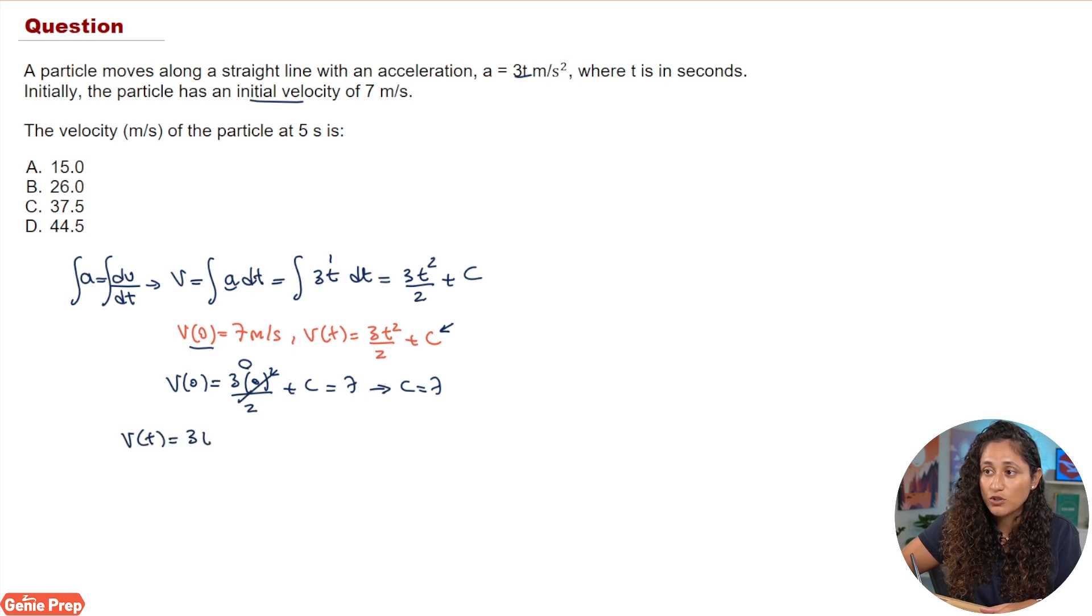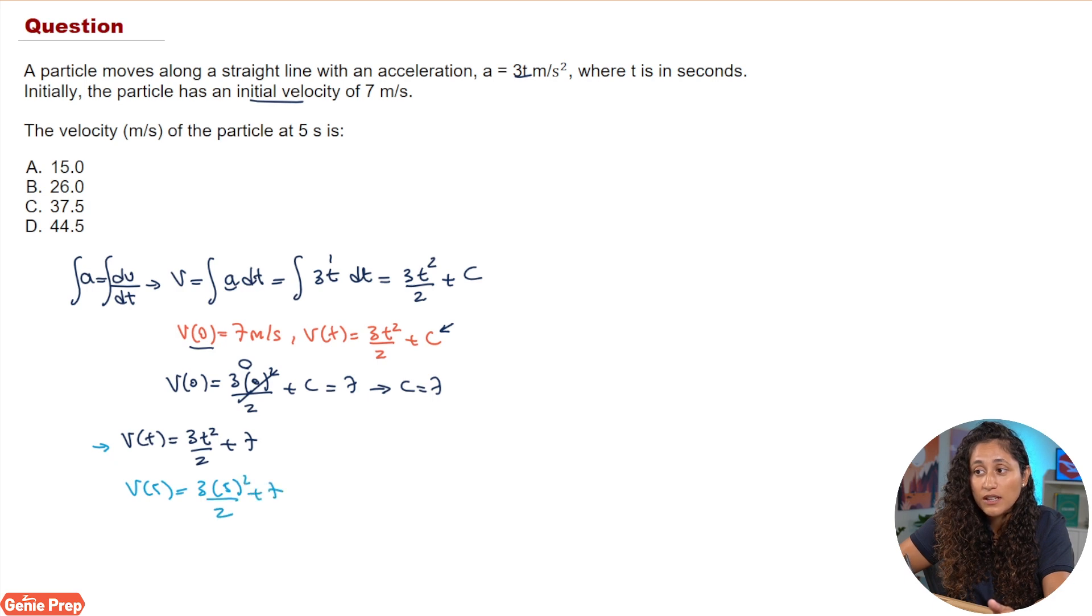Now to determine the velocity at 5, all we need to do is just substitute 5 into this equation. We're going to have v of 5 equals 3 times 5 squared over 2 plus 7. If you plug those numbers into your calculator you're going to get 44.5. Now if we take a look at the multiple choice, the answer is going to be D.